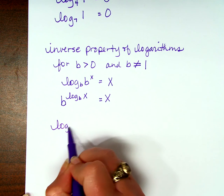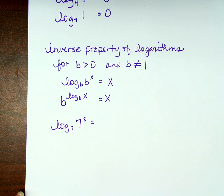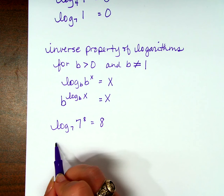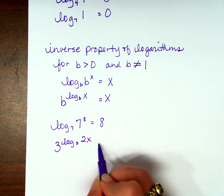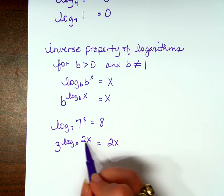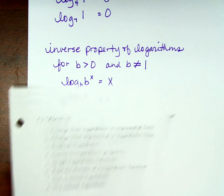For example, log base 7 of 7 to the 8th power, that's kind of like what we were talking about earlier. What's the answer? 8. But what they're also saying is 3 to the log base 3 of 2x, when the bases are the same, what's the answer? Whatever's there. In this case, 2x. Do you understand that property?